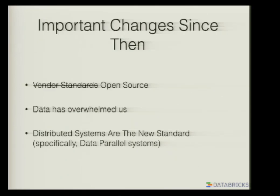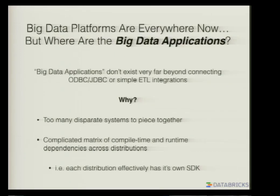A couple things have changed since that point in time. Probably the most important one is that vendor standards are not really what drives technology adoption anymore. Open source has proven to be the way that the community at large adopts new technology, and whoever has the best open source project is going to win. Also, this is the era of big data — data's kind of overwhelmed us, and as a consequence, distributed systems are the new standard. Big data platforms are everywhere — everyone's got a Hadoop system or maybe Cassandra or whatever. But the truth is that there's not a large ecosystem of big data applications. There's a whole lot of people who maybe have a little ETL integration or connect through an ODBC or JDBC driver, but we haven't seen an ecosystem of actual big data applications. And I think the reason is that essentially it's too hard to do.